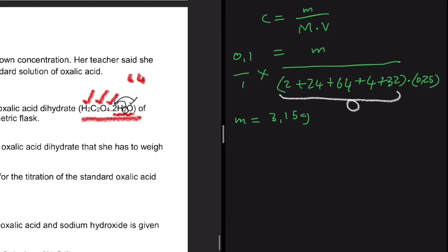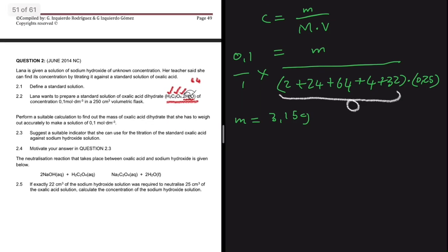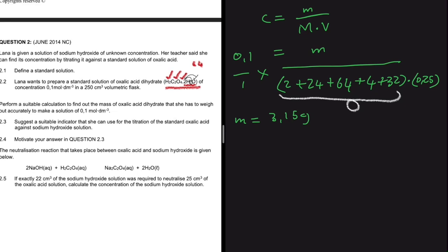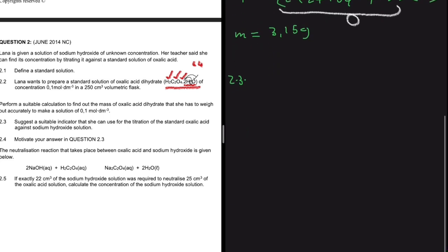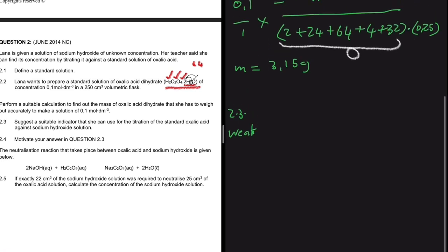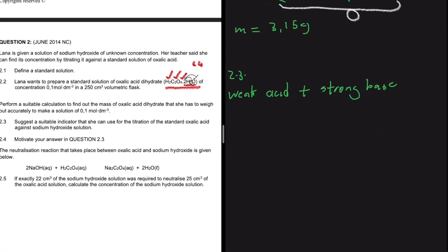For question 2.3, we need to suggest a suitable indicator for the titration of standard oxalic acid against sodium hydroxide solution. The rule is: when you have a weak acid and a strong base, the resulting pH will be basic, so you use phenolphthalein.